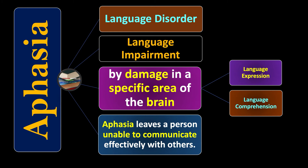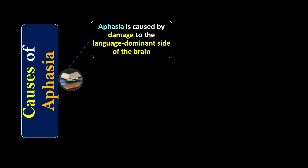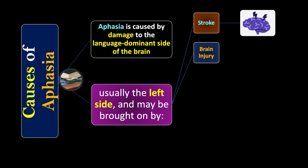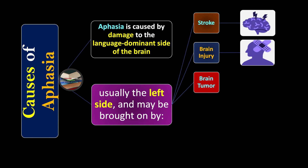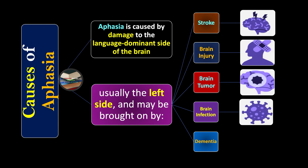Aphasia is caused by damage to the language-dominant side of the brain, usually the left side. It may be brought on by a stroke, brain injury, brain tumor, brain infection, or dementia, as shown in the pictures.